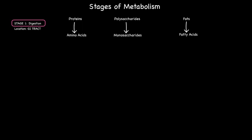These end products of digestion are then transported across the epithelial lining of the small intestine and eventually end up within the bloodstream, from which they are transported into cells, where stage two begins.